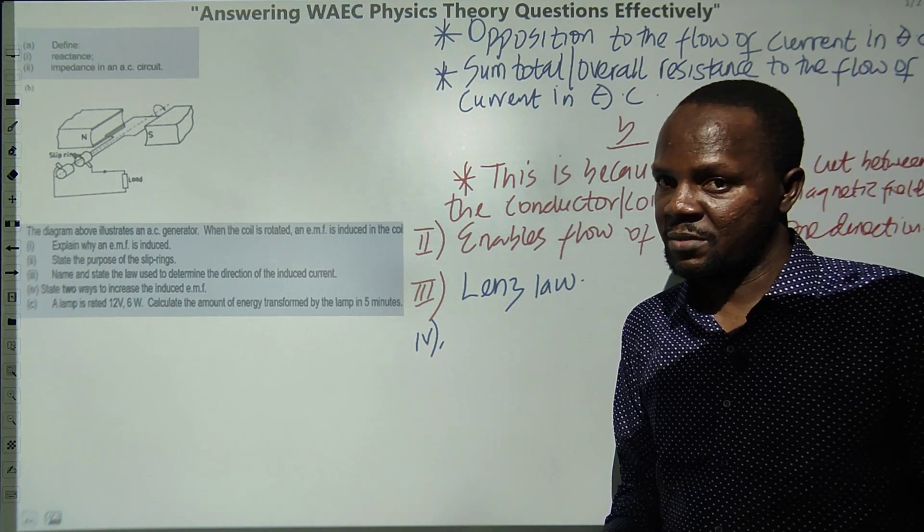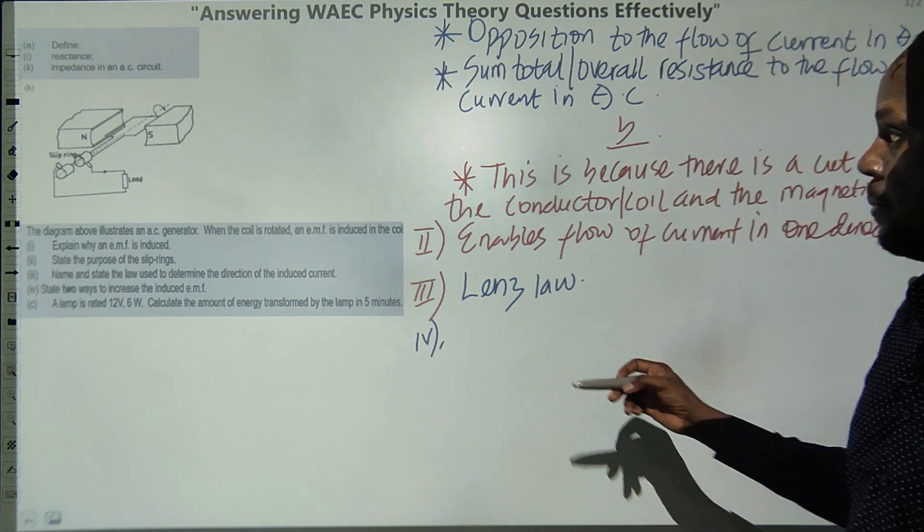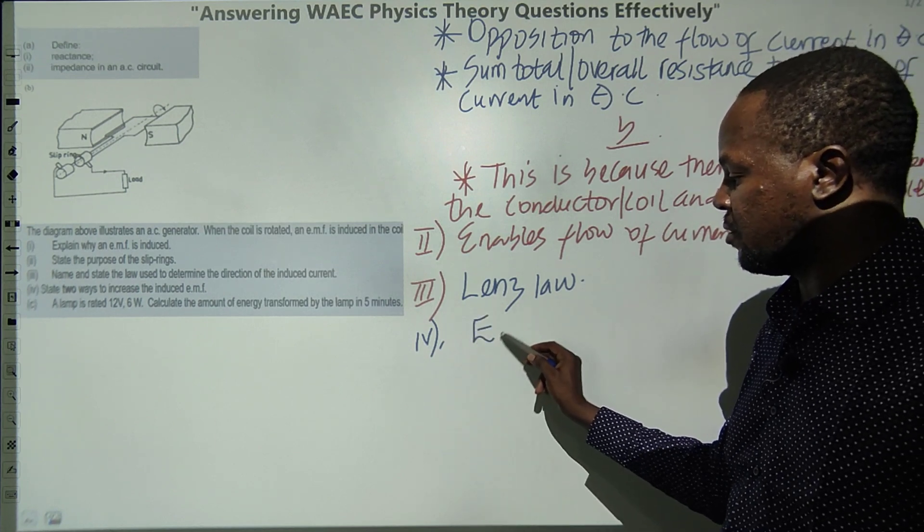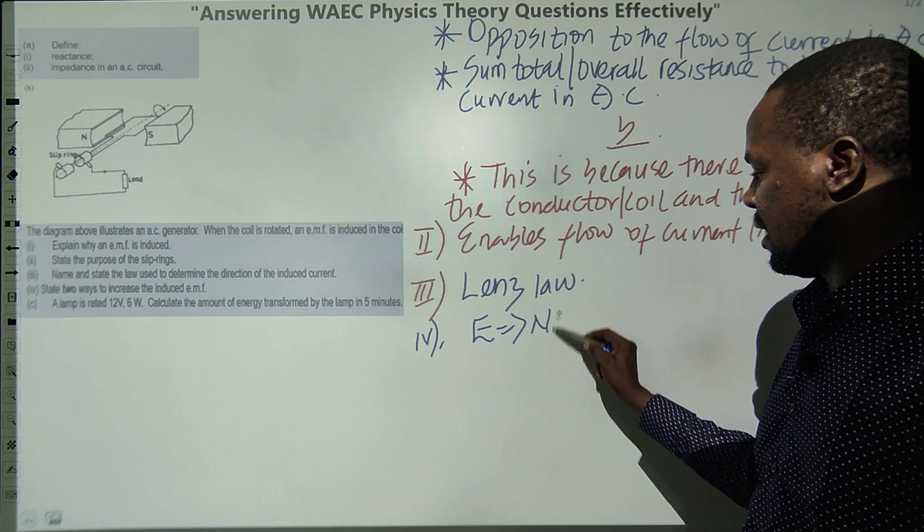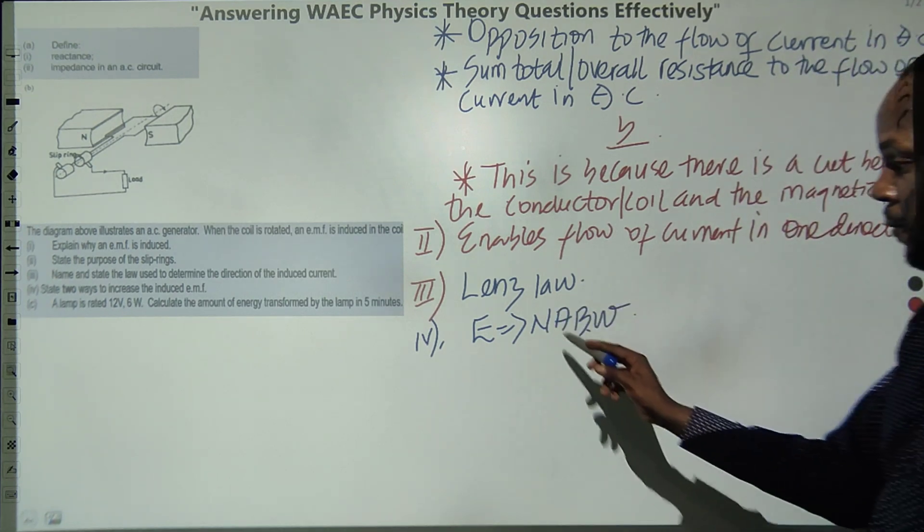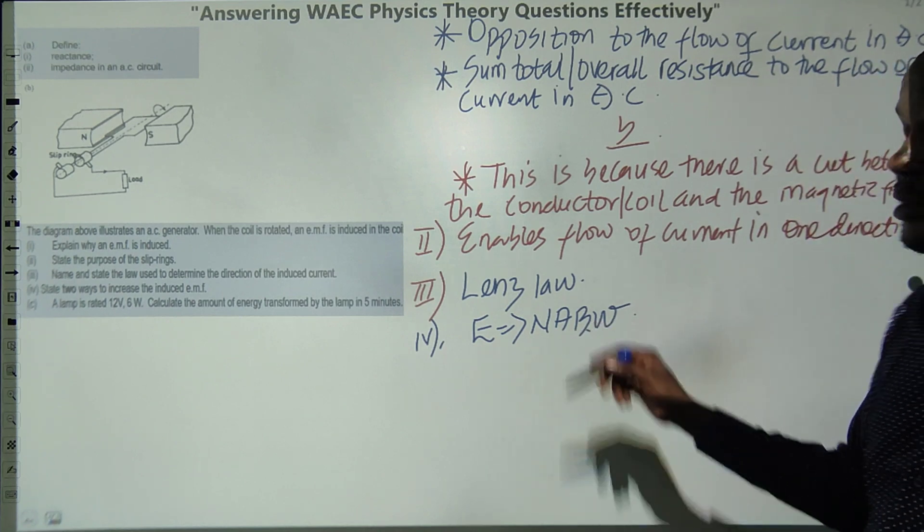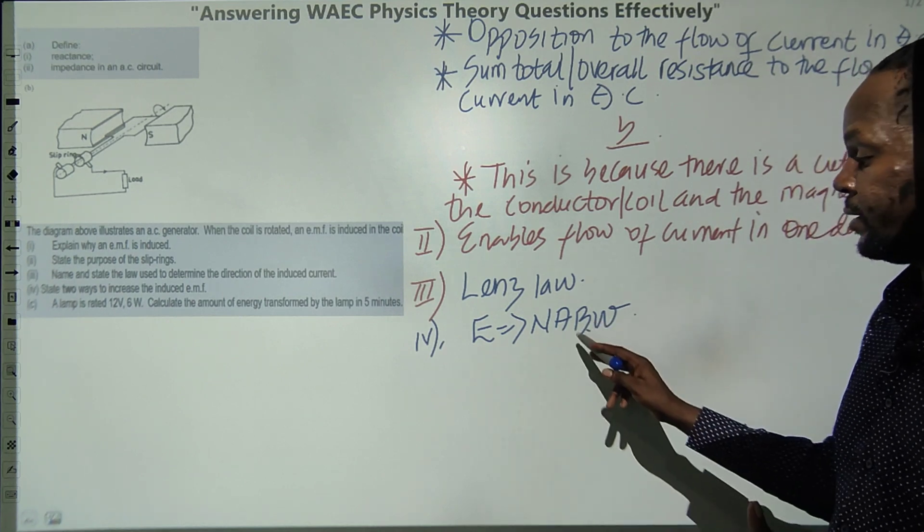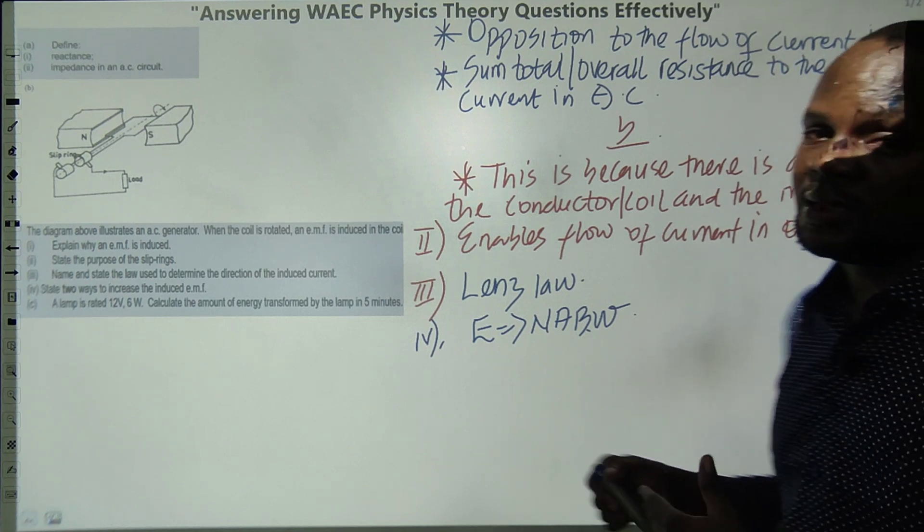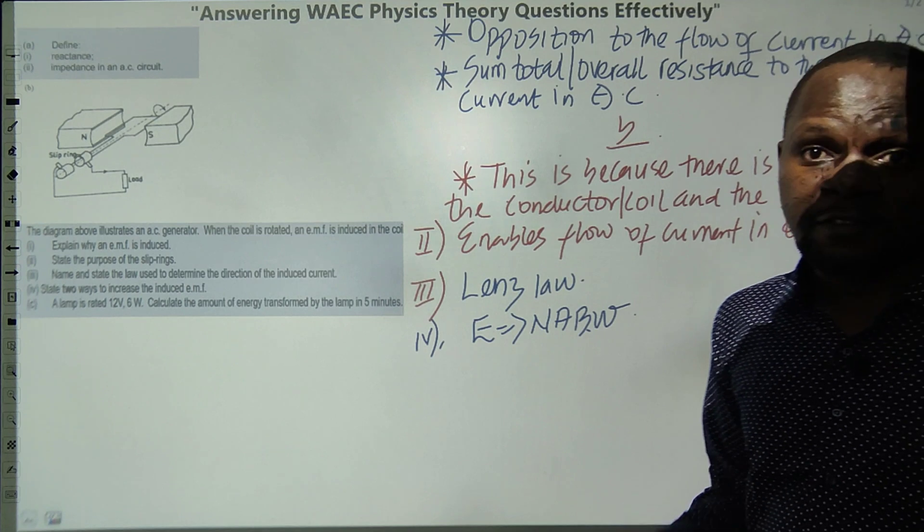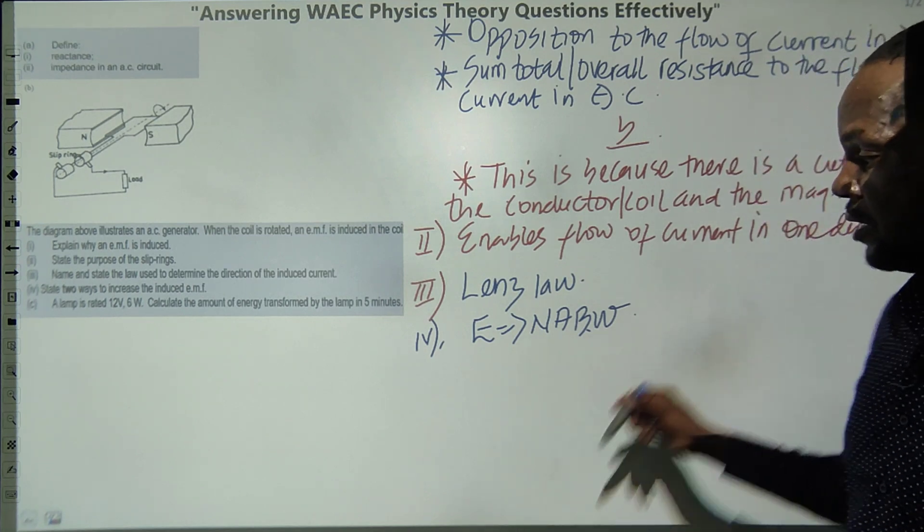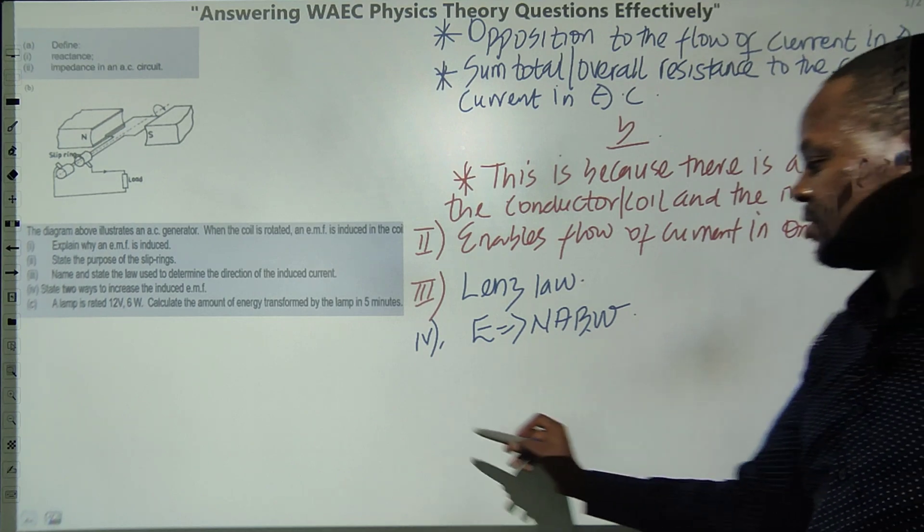This EMF can be increased in different ways. If electromotive force or induced EMF is given by the formula n·A·B·omega, it depends on the two you want to mention. For example, I can say: one, increasing the number of turns; two, increasing the area; three, increasing the magnetic field; and four, increasing the angular velocity. Just pick any two that is convenient for you and keep this at the back of your mind.